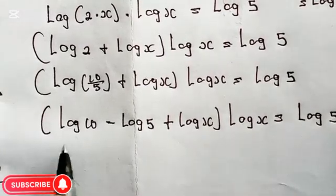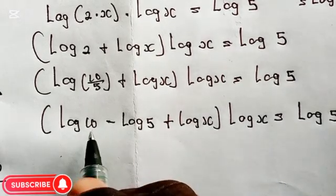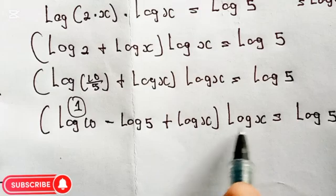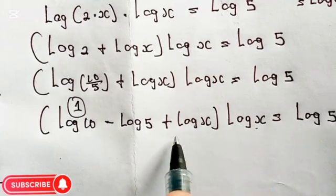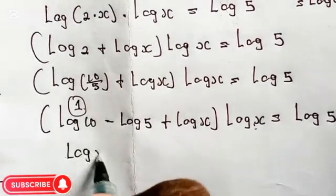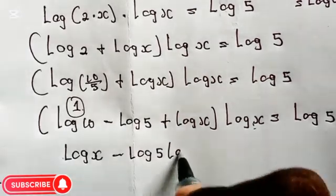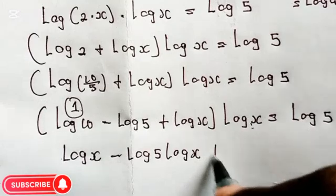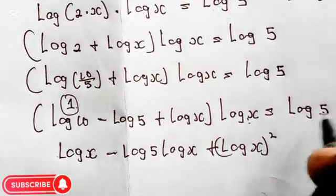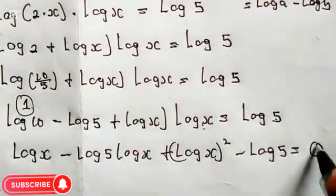Now don't forget log 10 with base 10 equals 1. So we substitute 1 for log 10. Multiplying through by log x to open the brackets, we get: log x minus log 5 times log x, plus log x squared, minus log 5, all equals 0.